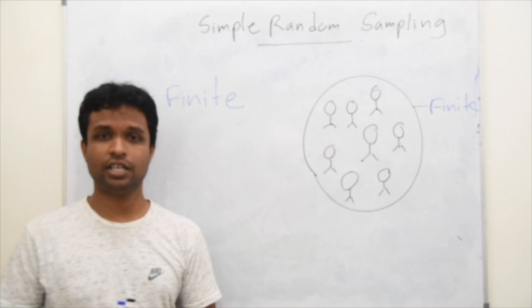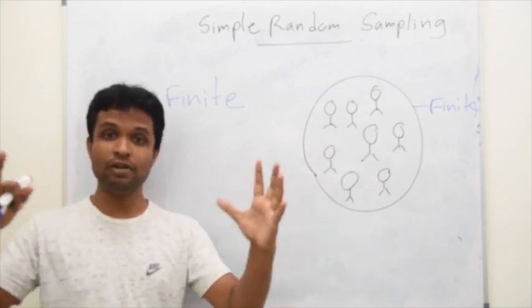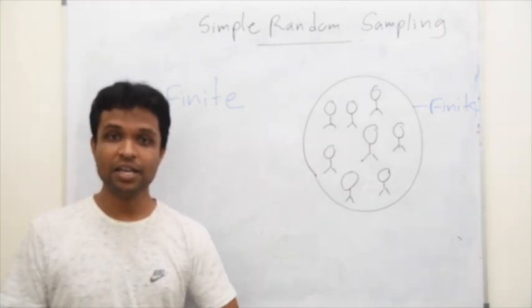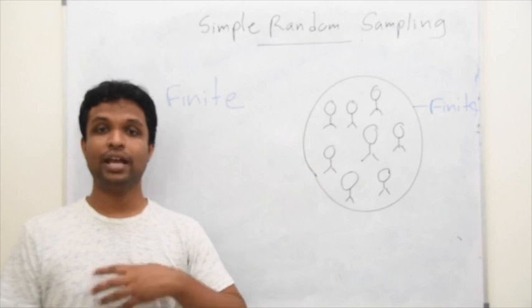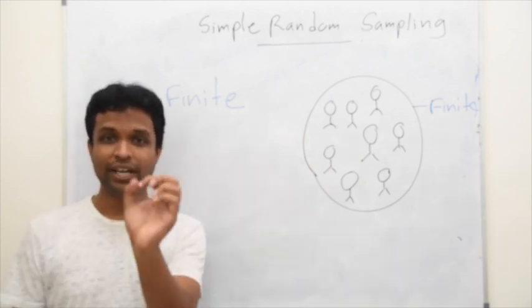If somebody says that I applied simple random sampling for one million population, it may be correct but there's a high probability to end up with wrong estimation. Why is that?